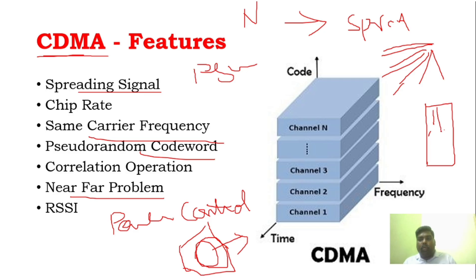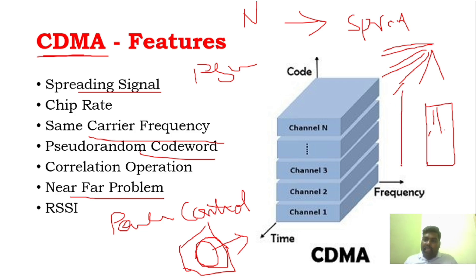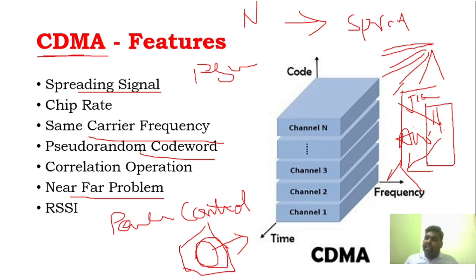But if a nearby user — a geo tower user — comes close to the base station, their signal will be the strongest signal compared to the far user's signal. The near user's strong signal will make the far user's signal appear very weak. This is the near-far problem — the stronger signal dominates the smaller signal, reducing the probability of receiving the weaker signal.